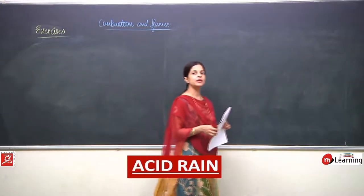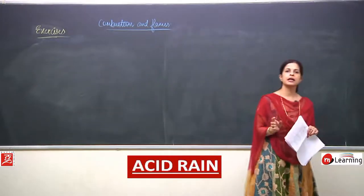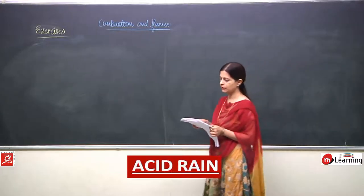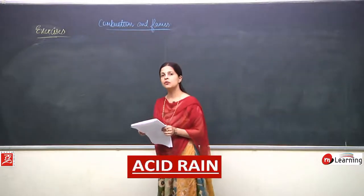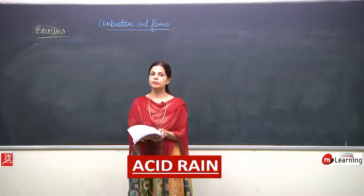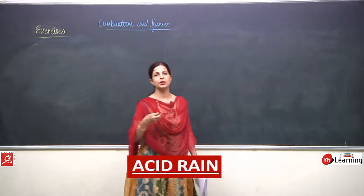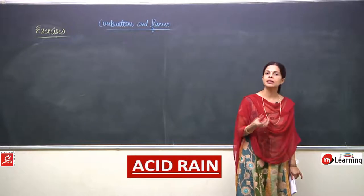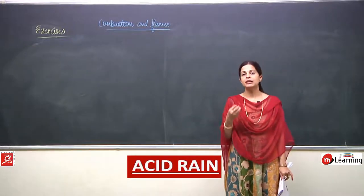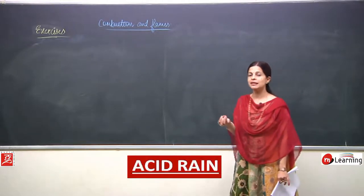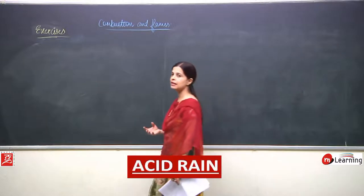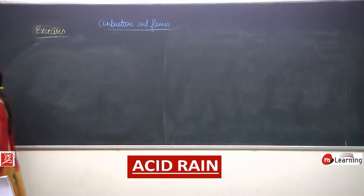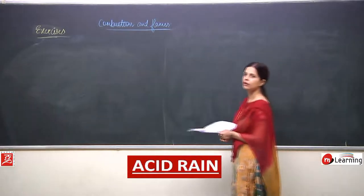Now we will discuss the keywords given in the NCERT. The first keyword is acid rain. Whenever we burn something, the substance combines with oxygen and oxides are formed — for example, when carbon burns. Next is calorific value.